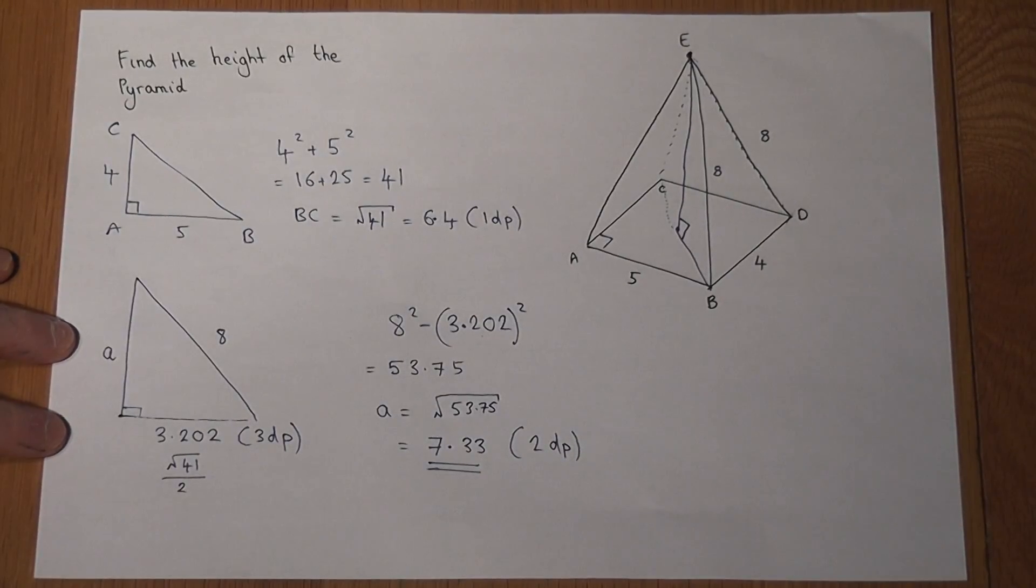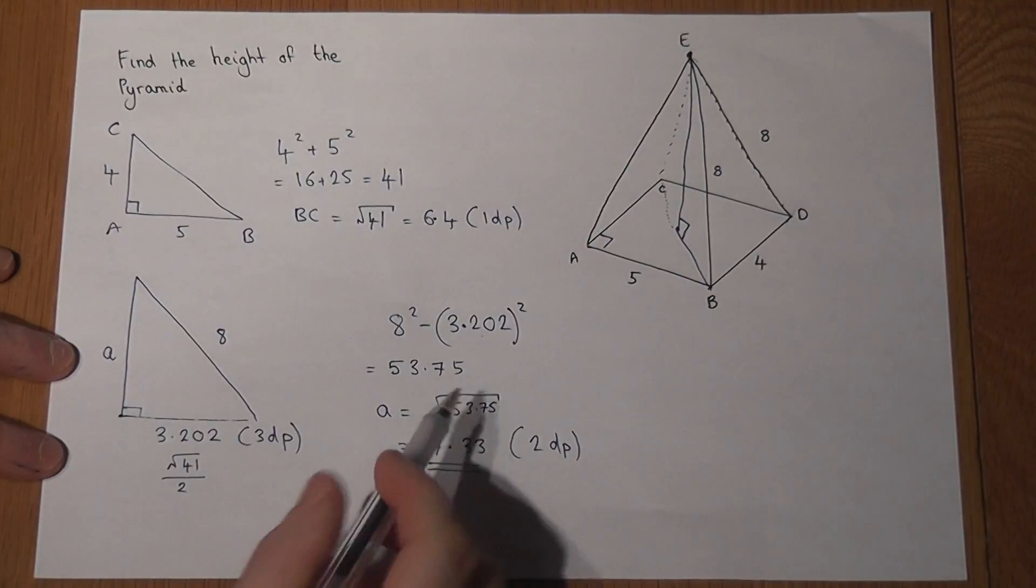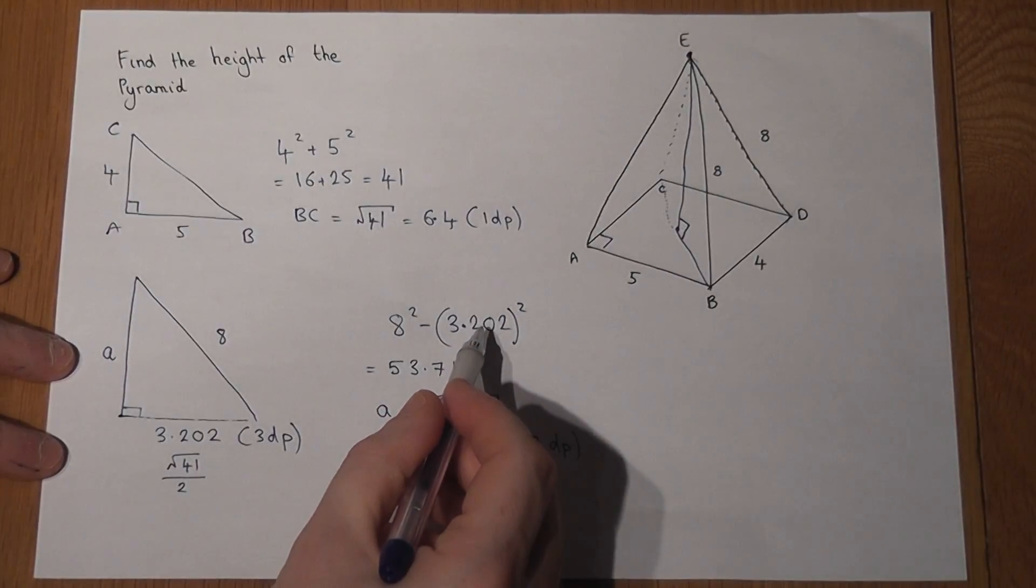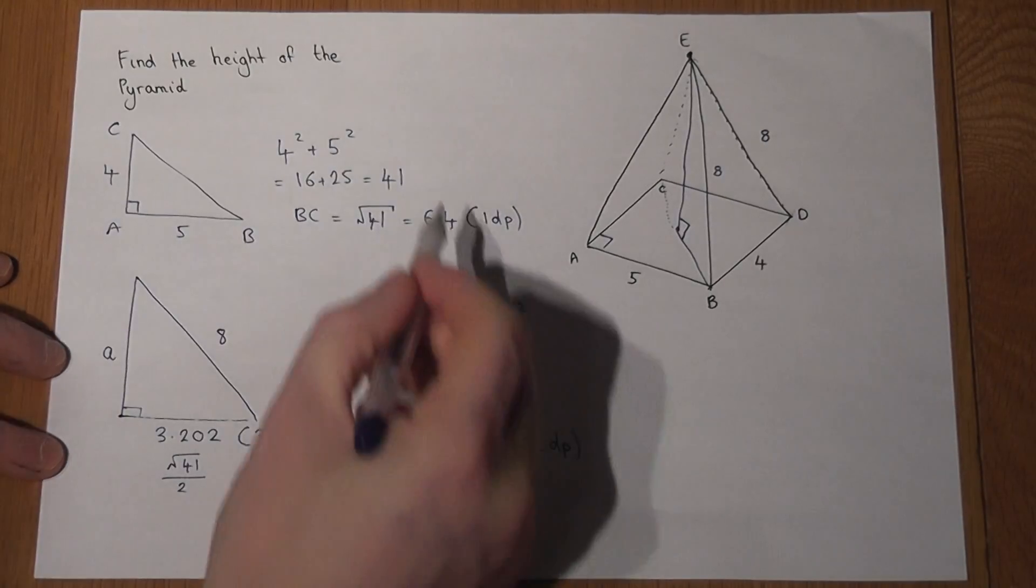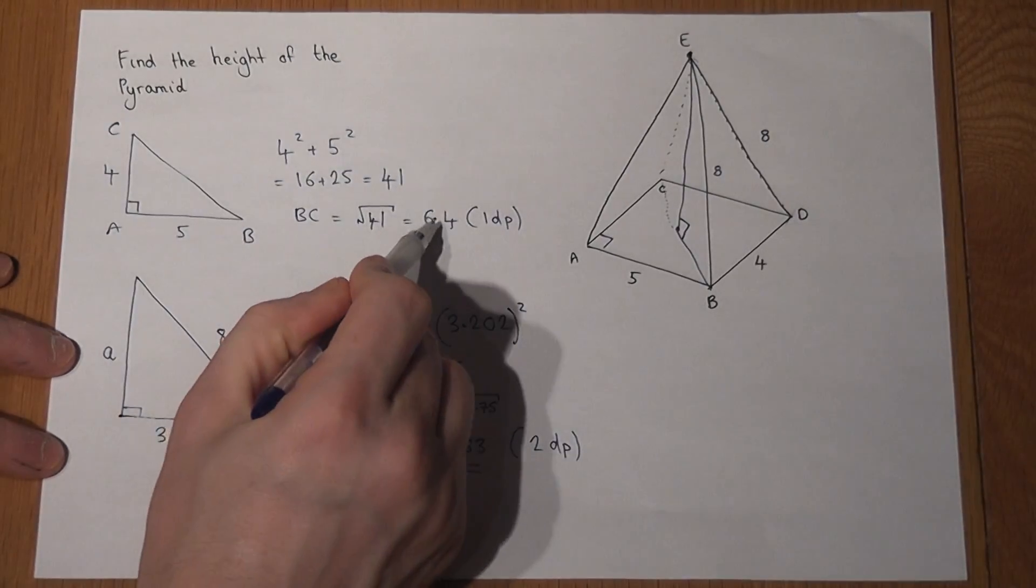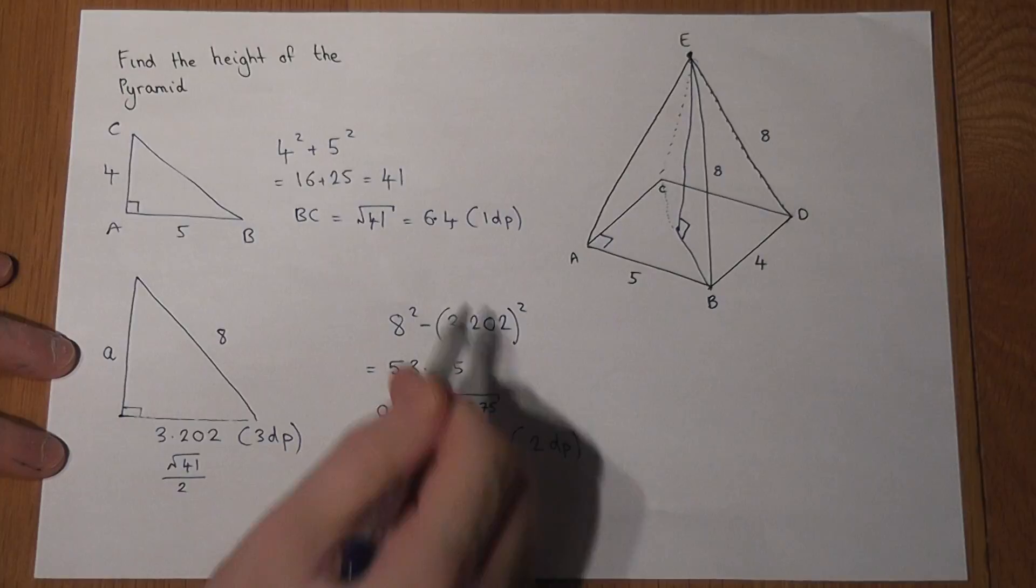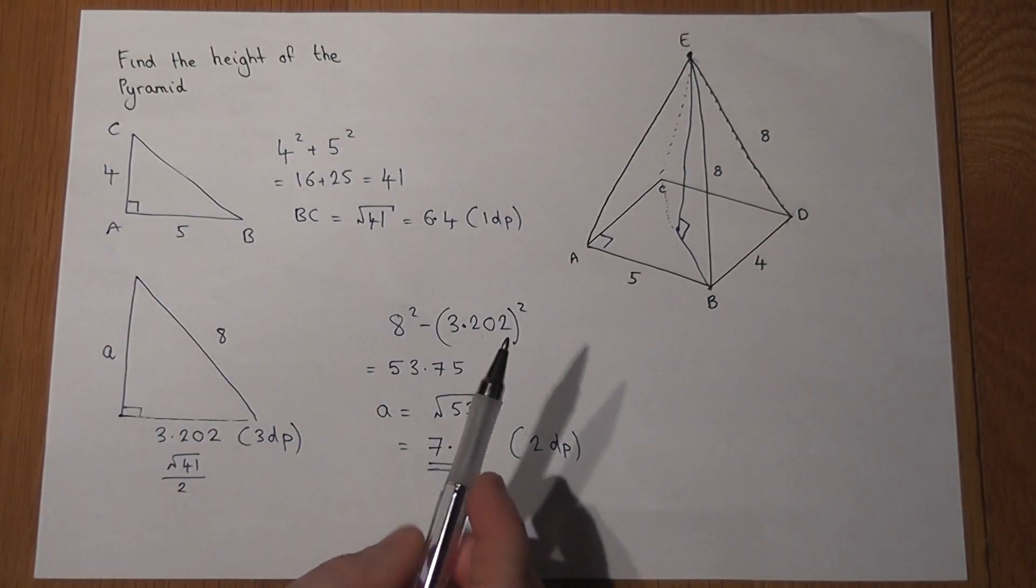So again, the key thing here is to visualize the right-angled triangles within the shape. And when we use calculations later on that come from a previous part, use the most accurate number possible to ensure your final answer is as accurate as it possibly can be.